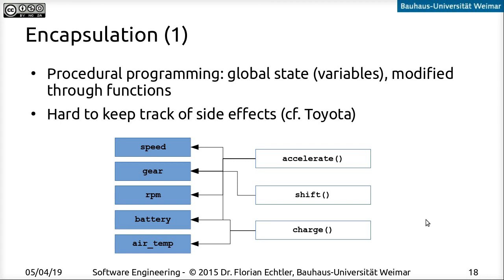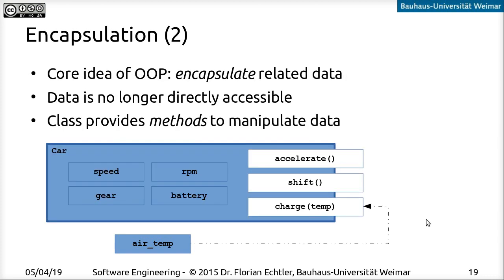They had something like 10,000 global variables and each method was basically permitted to modify each of those 10,000 variables, making it really impossible to keep track of what is changed where — which of course introduces errors quite quickly. To deal with this, the idea is to use encapsulation: we put related data into a class, encapsulate it, and can't access the individual data items directly anymore. We can only access them through the methods of the class.